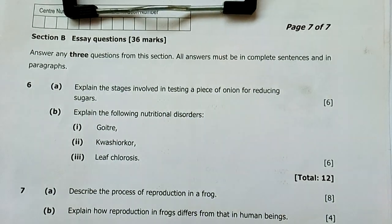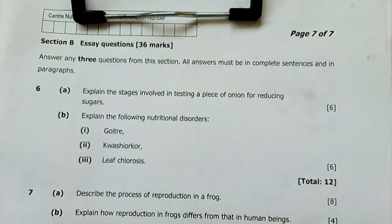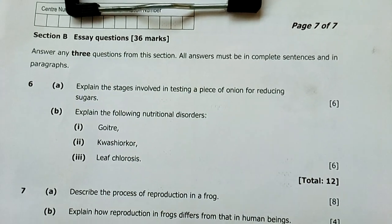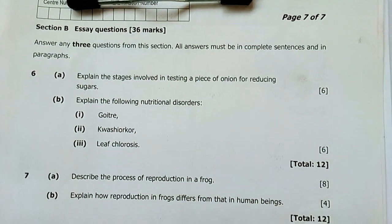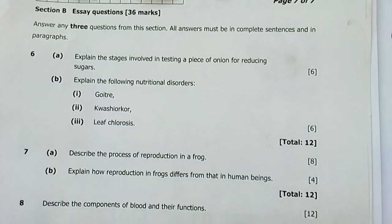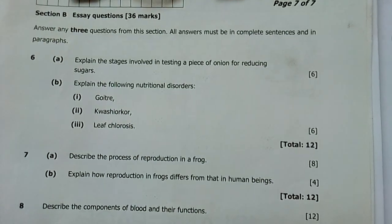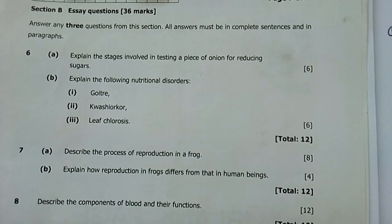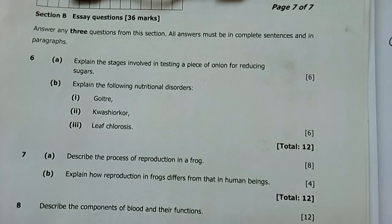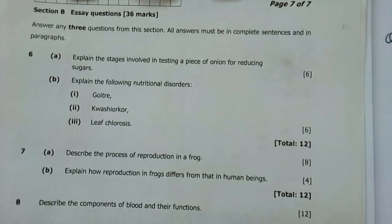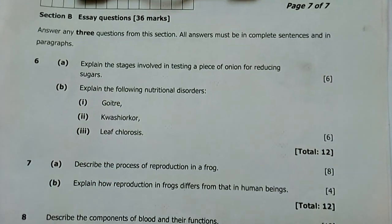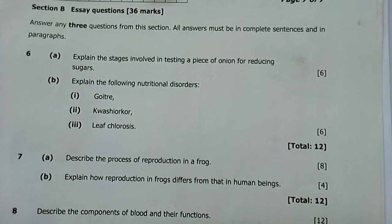Ni hao — that's Chinese for 'hi,' ni hao. I think, I hope I got it right. So this is Section B for Biology 2020, Biology 2, Section B, where I have to write a lot of things.